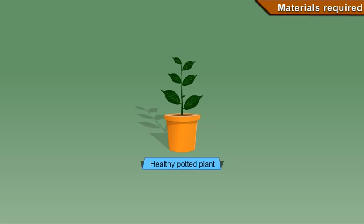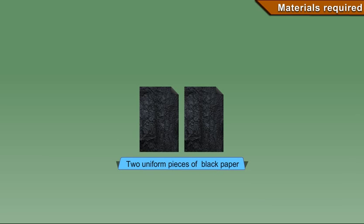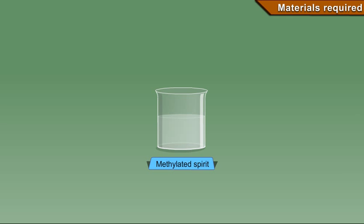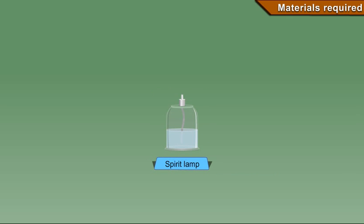Materials required: healthy potted plant, two uniform pieces of black paper, firm paper clips, methylated spirit, iodine solution, spirit lamp, petri dish, forceps, test tube, and test tube holder.